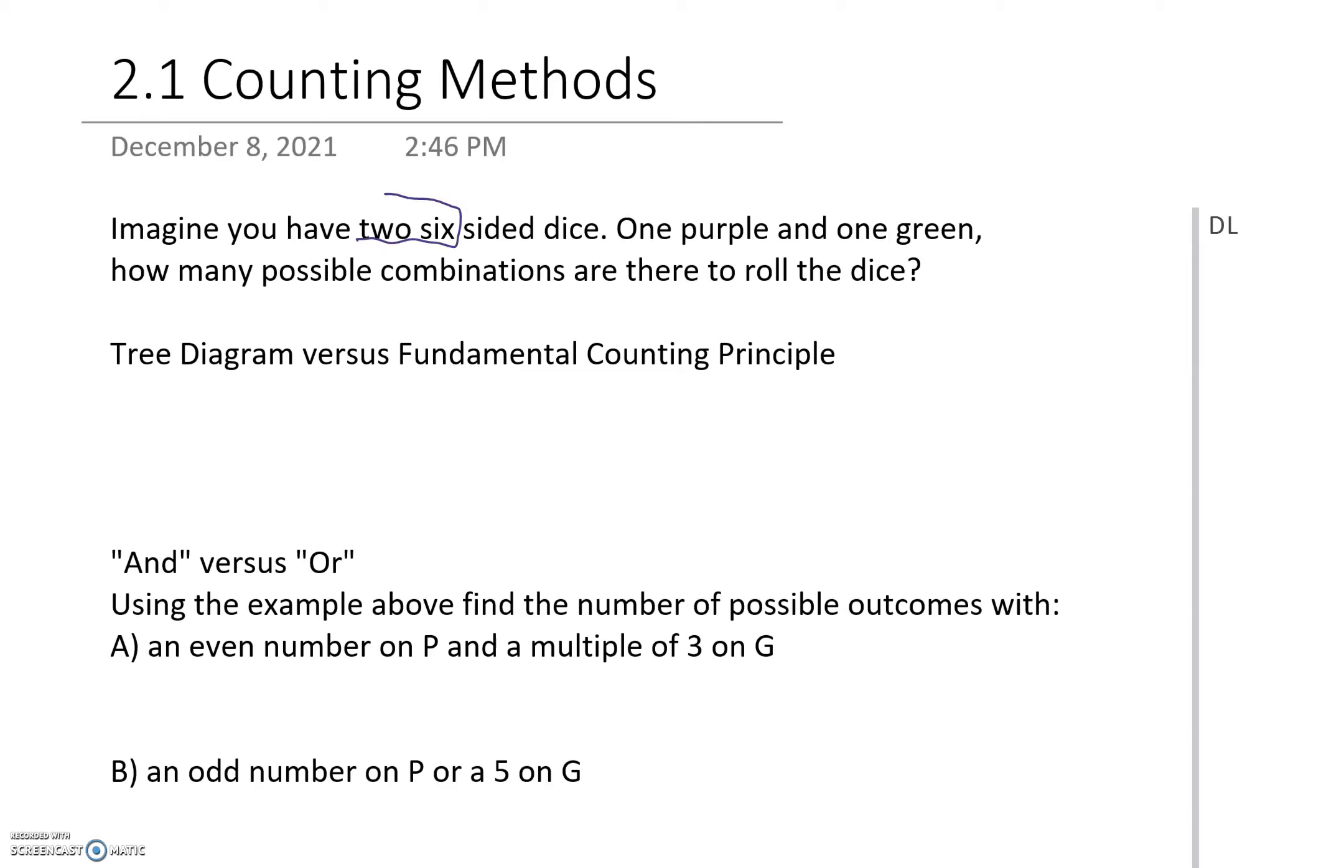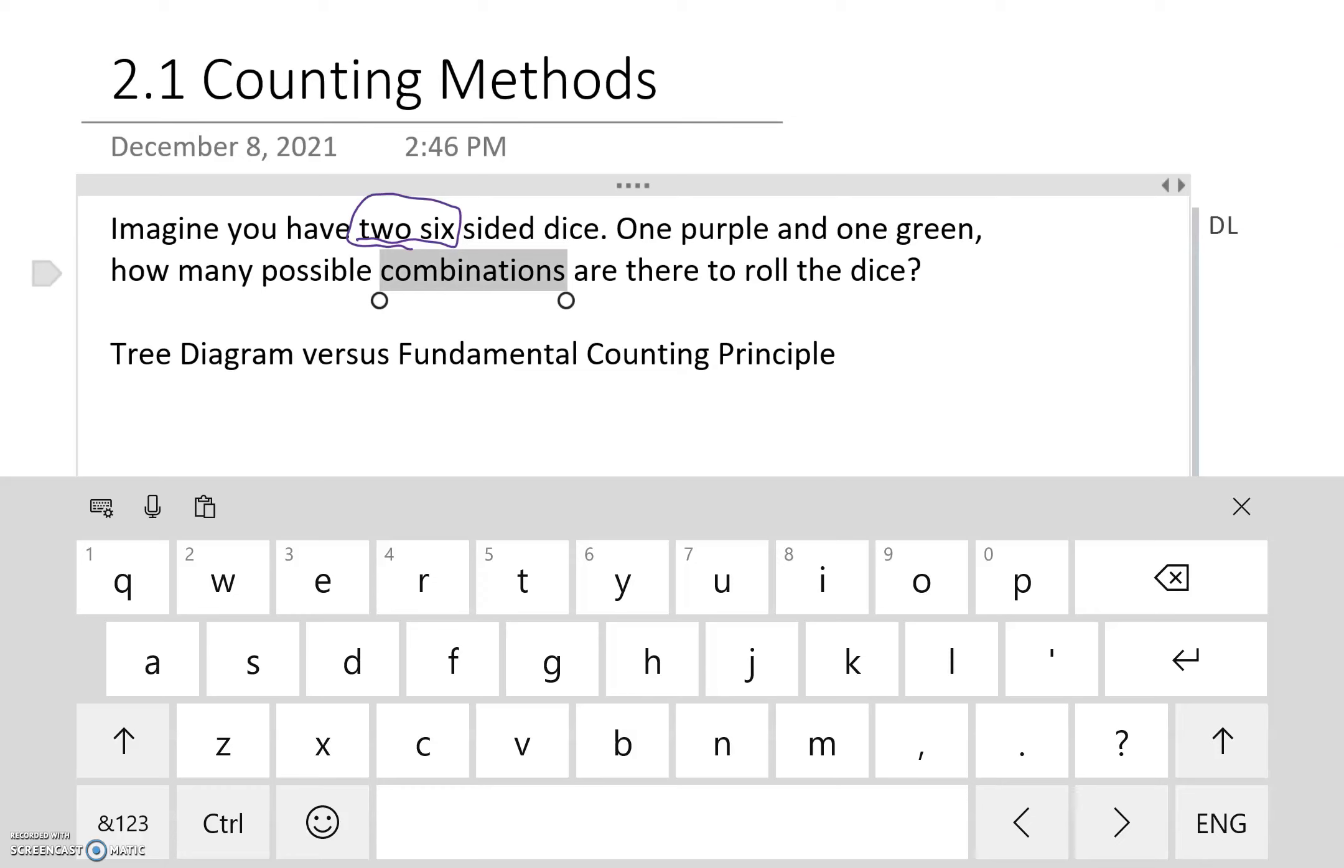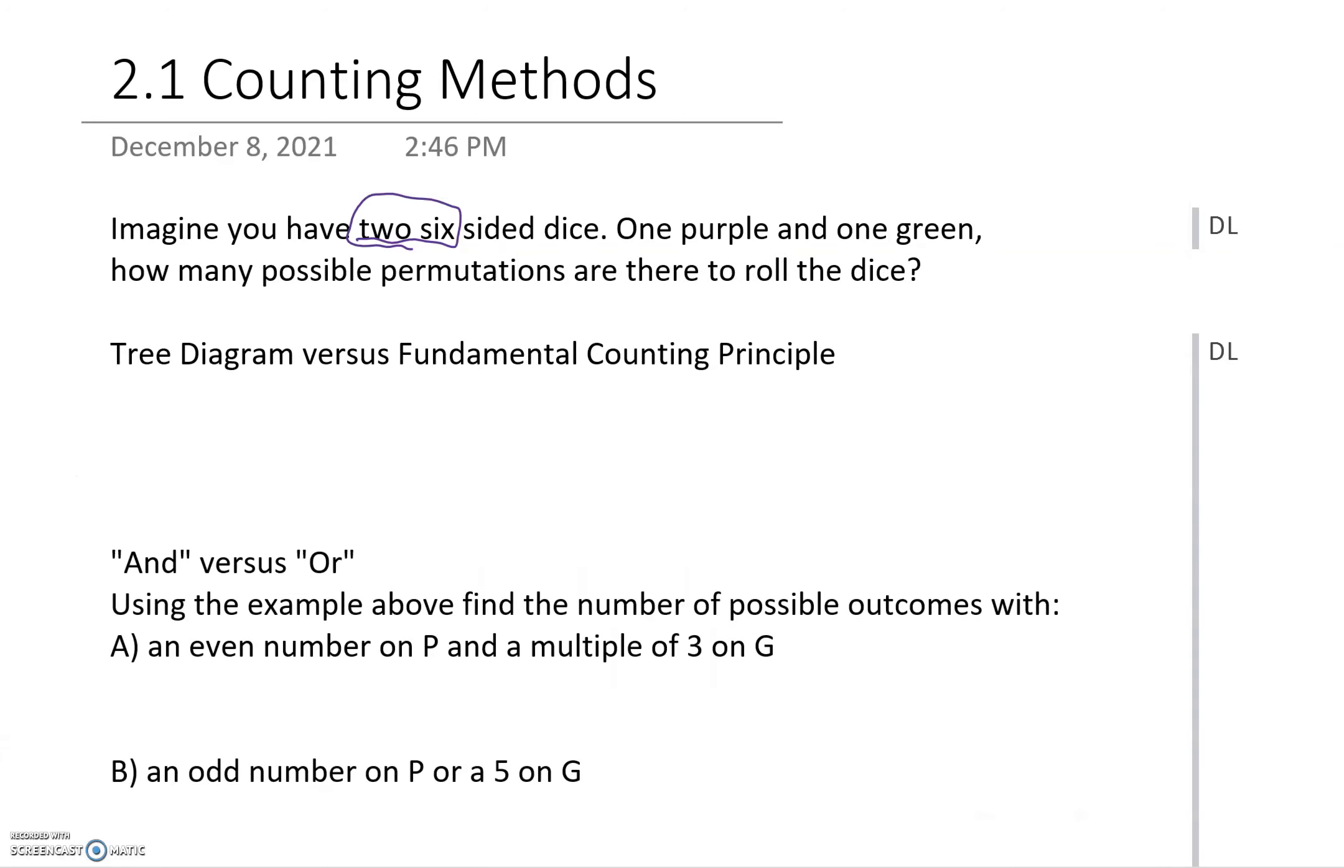Imagine you have two six-sided dice, one purple and one green. How many possible combinations are there to roll the dice? Or I should probably use the word permutations as we are going to be using that combination word for a very specific type of thing. So basically how many different ways, how many possible ways are there to roll the dice?